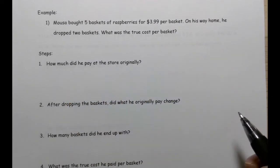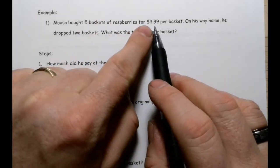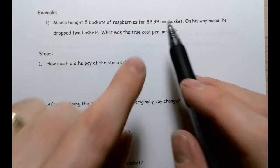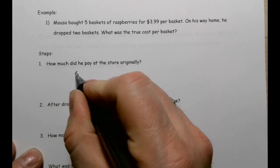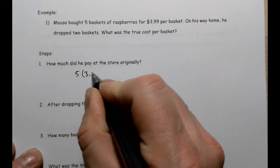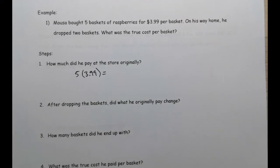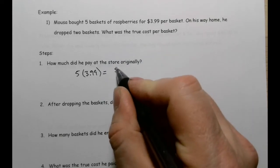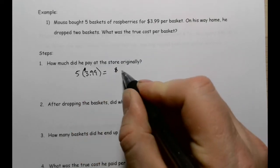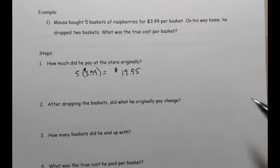So let's take a quick look at an example of how that works. Musa bought five baskets of raspberries for $3.99 per basket. On his way home, he dropped two baskets. What was the true cost per basket? Well, each basket was supposed to be $3.99, and he bought five of them. So how much did he pay at the store originally? That's going to be five times $3.99. He paid $19.95. Now, that's not going to change. He's paid that money, it's done. He's given it to the store. He's walked home. Basically what we have here is this exchange. He paid $19.95, he received what he believed was going to be $19.95 worth of berries.